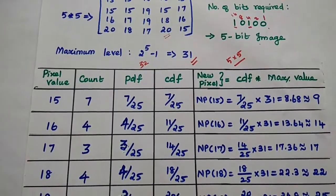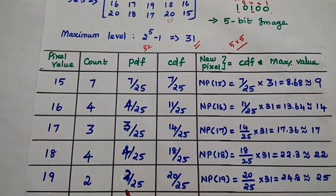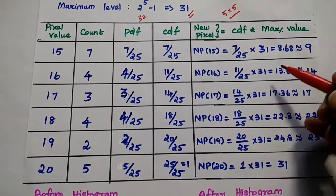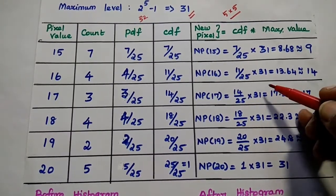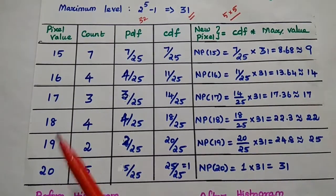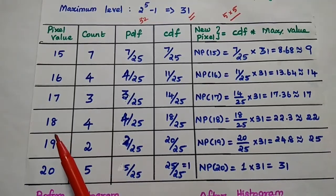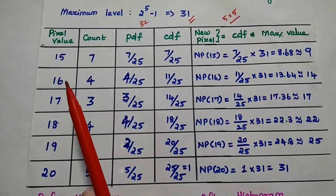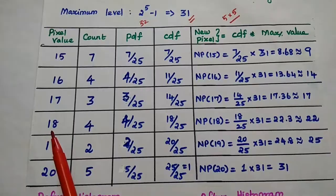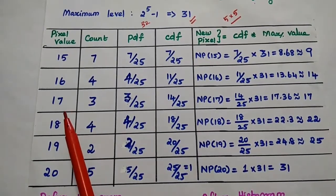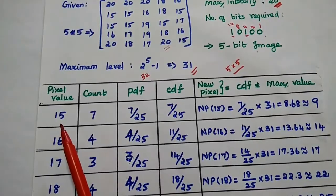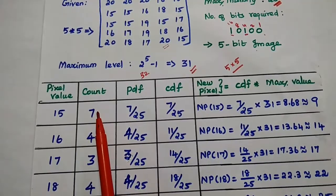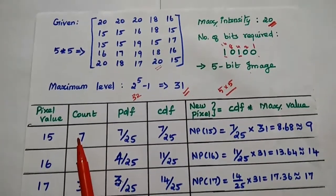Now we find new pixel values using a tabular column. The first column contains the given pixel values written in ascending order — smaller to larger. So we have 15, 16, 17, 18, 19, and 20. The next column is the count — the number of occurrences of each particular pixel value.